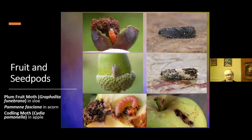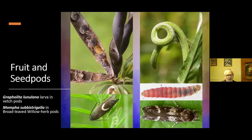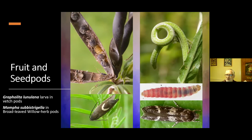In seed pods you can get things like Grapholita lunulana in vetch pods and Mompha subbistrigella in broad-leaved willowherb pods and other small willowherbs. It causes the seed pod to curve around in a really distinctive manner. The candy-striped larva can be seen if you open the pod up - it'll be in there chewing away on all the fresh seeds.